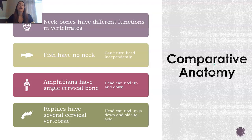Amphibians have a single cervical bone, so they can nod their head up and down, but they can't go side to side like reptiles. So reptiles have that vast range of neck movement.